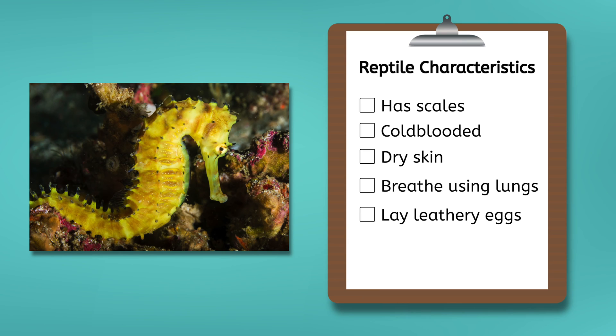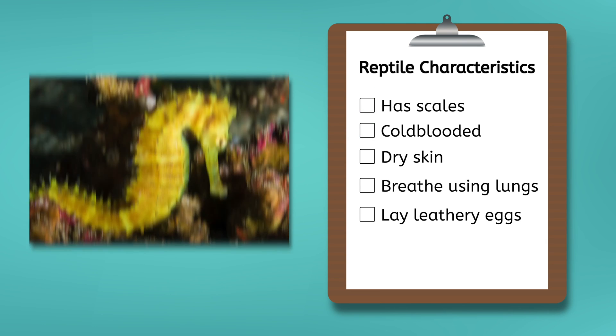The next animal is a seahorse. A seahorse is a cold-blooded animal that has scaly skin as well, but it's hard to tell if it's dry or not because a seahorse lives underwater. A seahorse doesn't have any legs, but it does have gills, which means it's not a reptile. Do you know what we can classify a seahorse as? A fish! That's right!